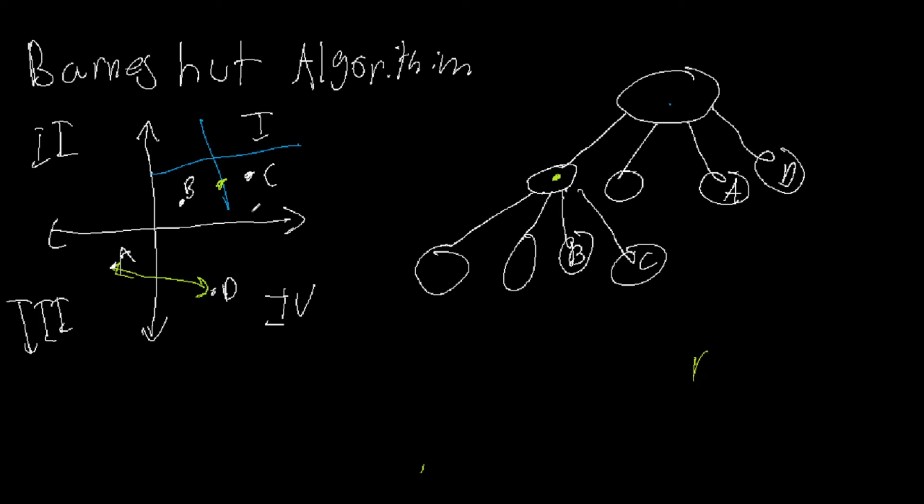Although O(n log n) is generally less than O(n²), in some edge cases the tree may not be optimal, or the particles may not be spaced well for the algorithm, so it can sometimes approach O(n²) complexity in those cases.